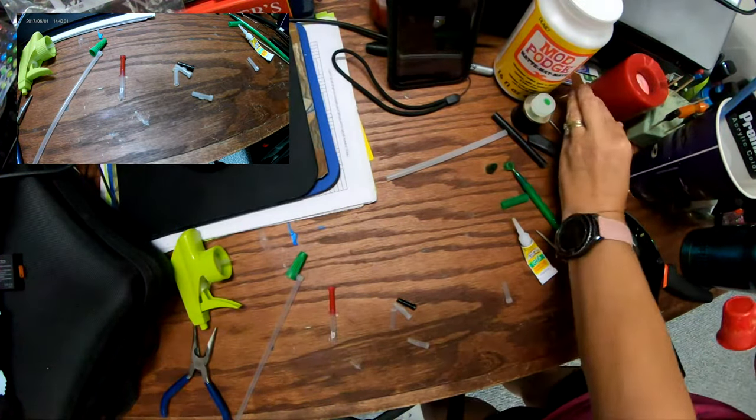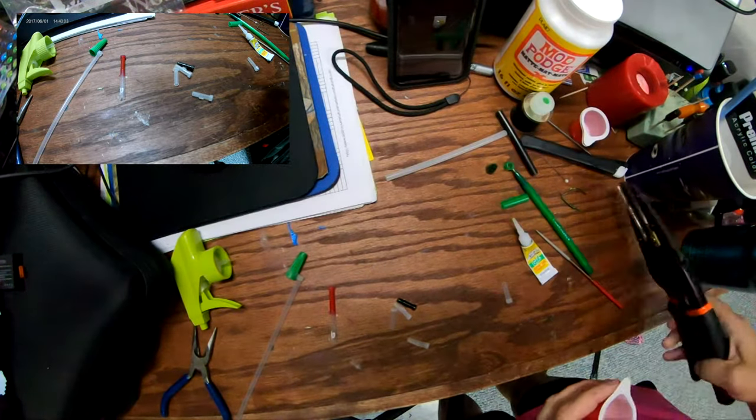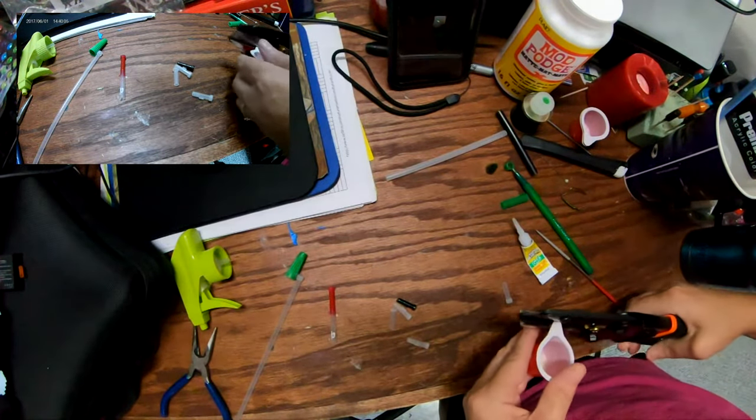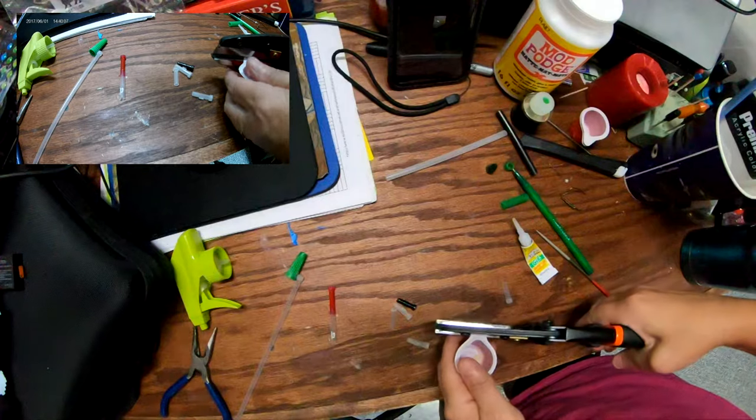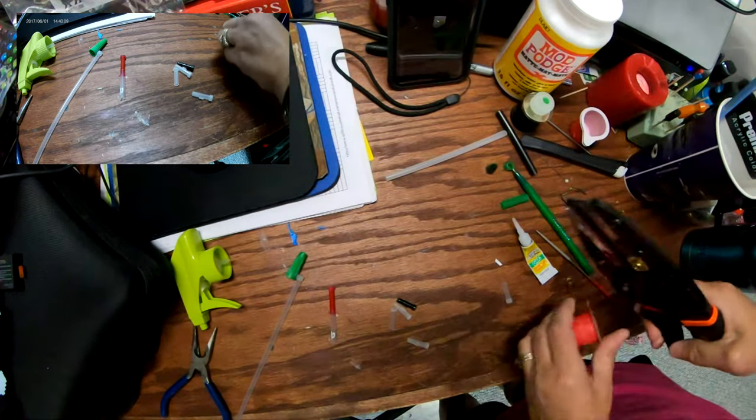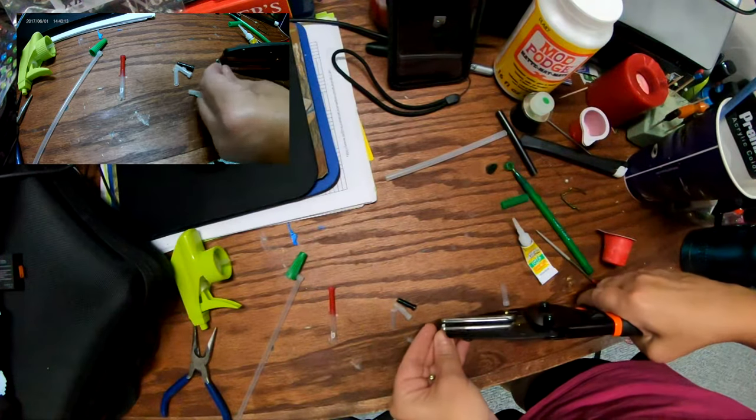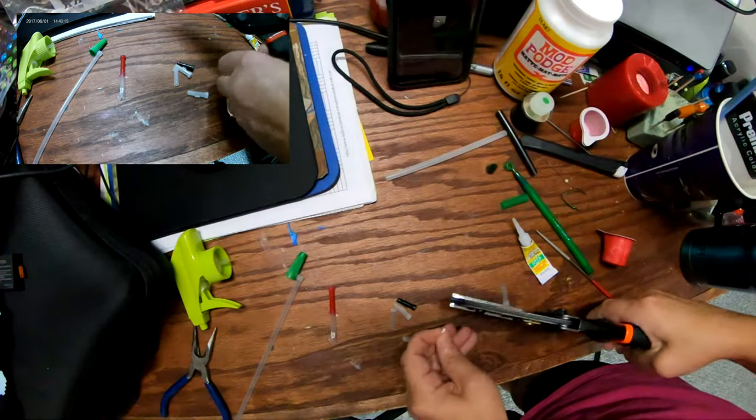You can use a coffee stirring stick. You can use pretty much anything you want for this part. The only thing is whatever you do, you have to make sure you cut it in a rectangle.